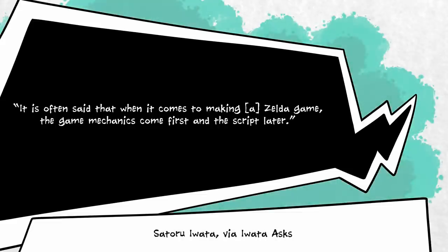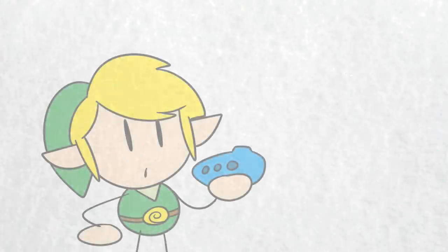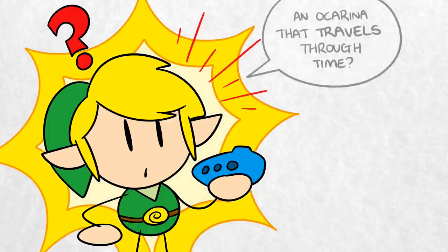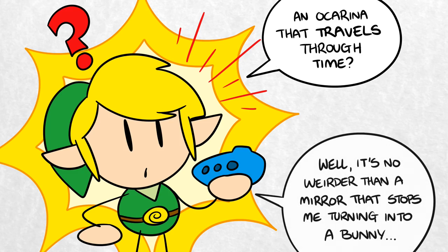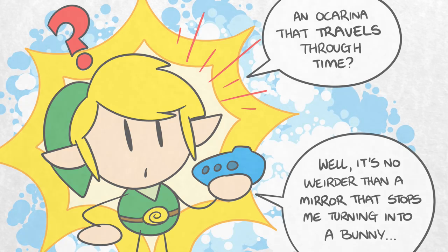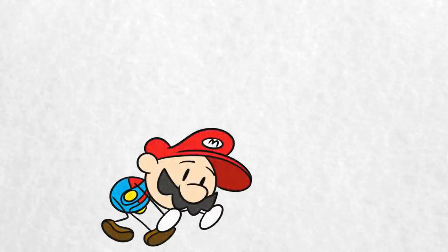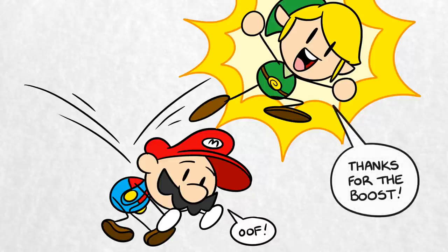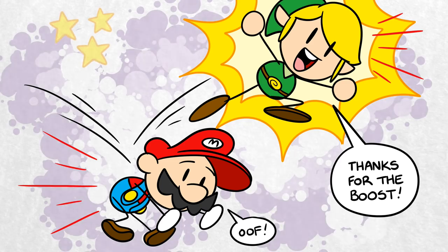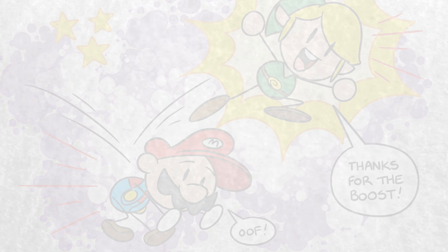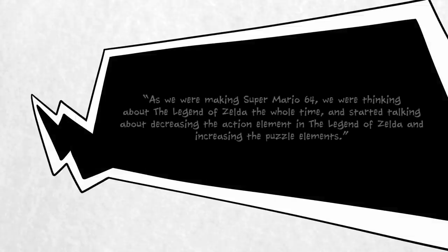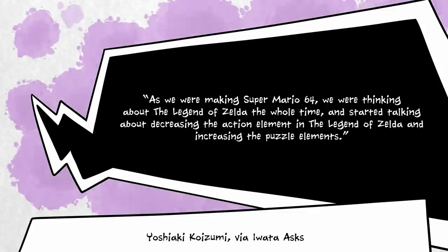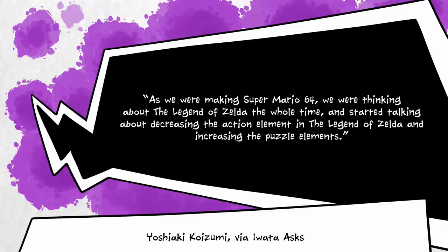The Ocarina of Time is a perfect example of this, and it's also the first time that the Zelda series featured time travel. The reason for this is purely inspired by the Nintendo 64 game's central gameplay, but it also perfectly reflects the attitudes and feelings within Nintendo at the time of the game's development. Work on Ocarina of Time began while many of the game's developers were still working on Super Mario 64, and according to Yoshiaki Koizumi, they were thinking about The Legend of Zelda the whole time, talking about decreasing the action element and increasing the puzzle elements.